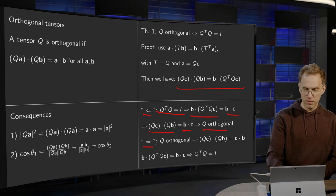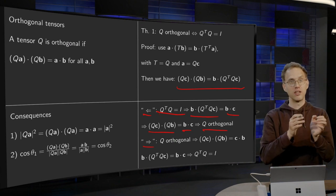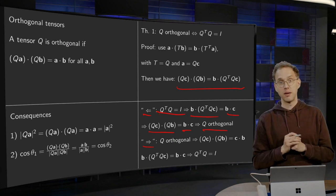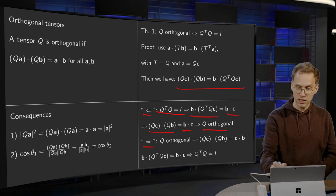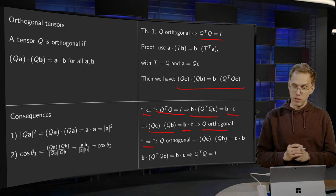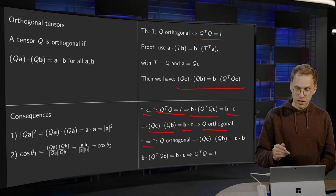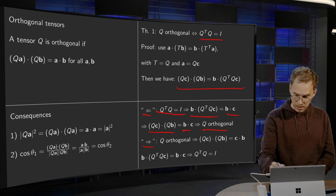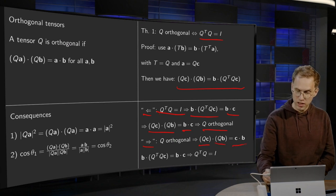Now from left to right. Assuming Q is orthogonal, we show that Q^T Q is the identity. How do we do that? We use the definition again: (Qc)·(Qb) = c·b.